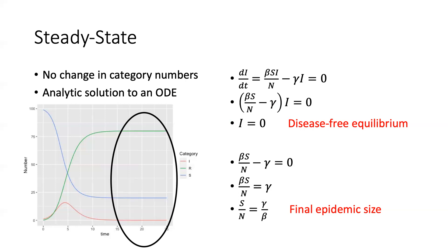You can do this for other models — it gets more complicated the more differential equations you add to your system. But for this SIR, it's fairly simple, and it gives us a good sense of how many people we expect to get infected over the course of the epidemic.